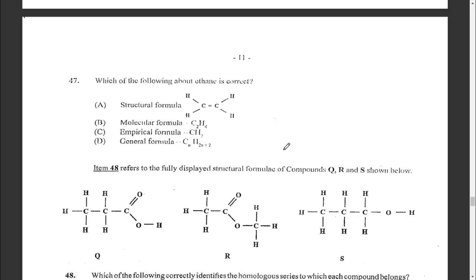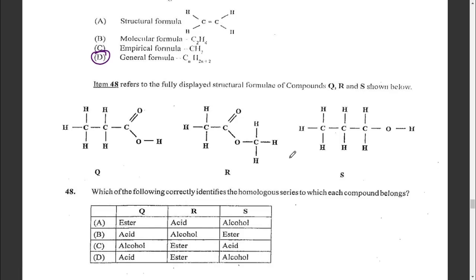Question forty-seven: which of the following about ethane is correct? Its molecular formula is C₂H₄, the empirical formula is CH₂, or the general formula is CₙH₂ₙ₊₂. The answer is D. Question forty-eight: looking at the fully displayed structural formulae of compounds Q, R, and S — Q is an acid, R is an ester, and S is an alcohol. We are looking for acid, ester, alcohol — the answer is D.